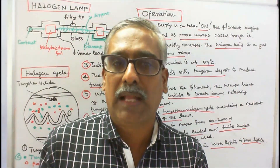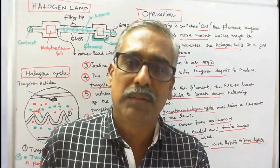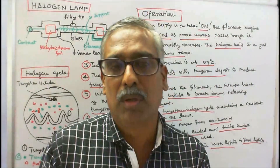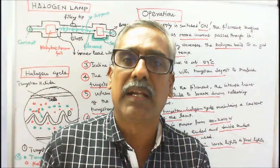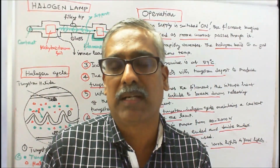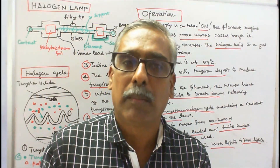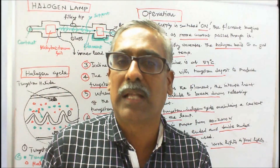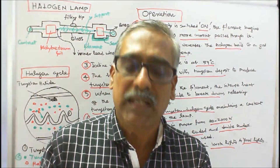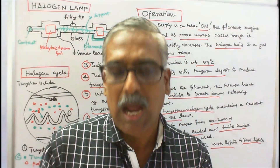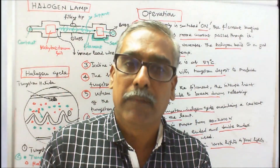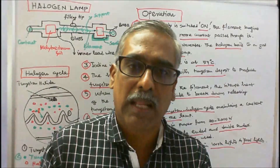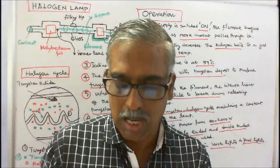Advantages of halogen lamps: (1) They are compact in size and lightweight. (2) The halogen lamp is fully dimmable, unlike compact fluorescent lamps. (3) It does not contain mercury, unlike compact fluorescent or mercury vapor lamps. (4) It offers better color temperature than standard tungsten lamps. (5) Its light is closer to sunlight. (6) It instantly switches on to full brightness with no warm-up time. (7) The filament burns hotter, so less wattage is required. (8) Lamp life is 2,000 to 4,000 hours, about two to four years.